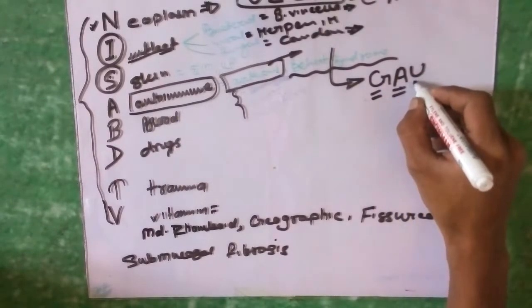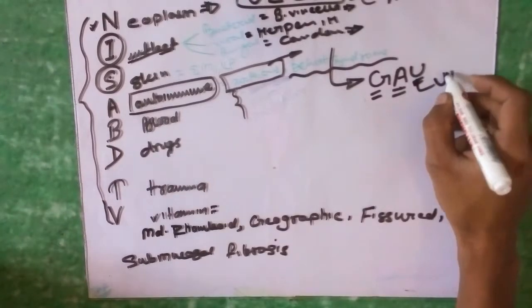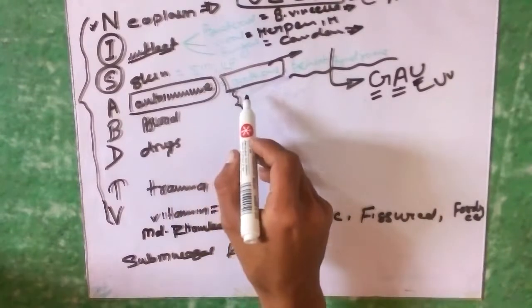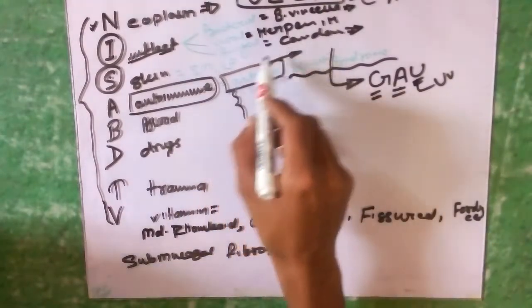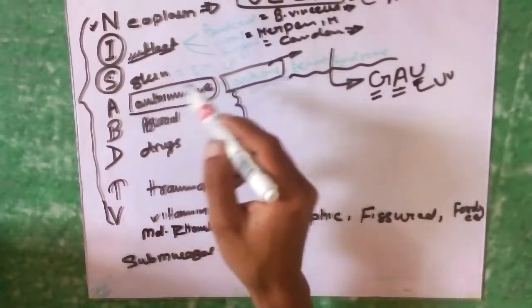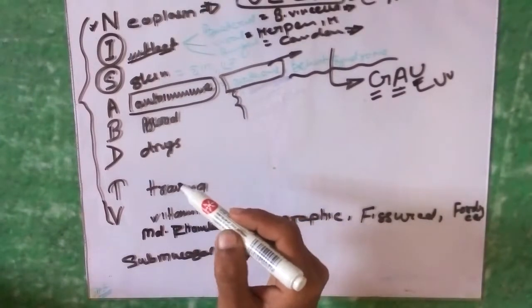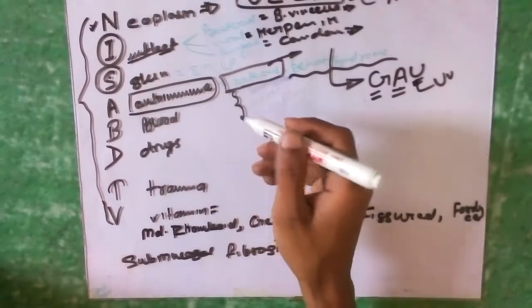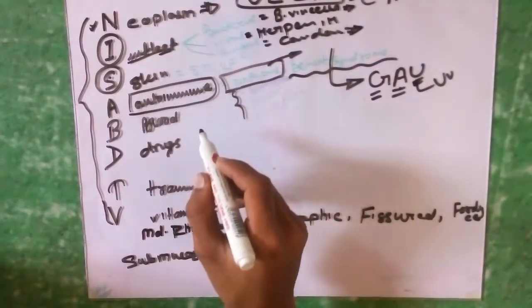Regarding aphthous ulcer, you already know that the cause can be any one of these, but most commonly it is regarded as autoimmune in nature.